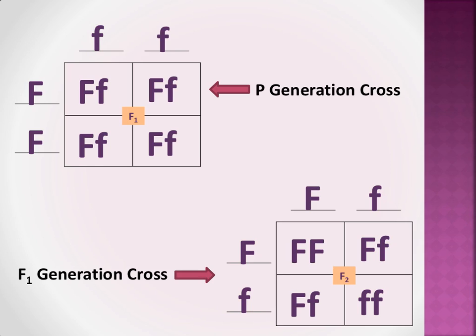Now let's consider that same exact information in Punnett square form. This Punnett square is the P generation cross — this would be the purebred white flower, and this would be the purebred purple flower. The resulting offspring are the F1, and you can see that they're all hybrids. When you cross the F1, as shown here in this cross, the F2 are inside of the Punnett square. They're predicted to have that 3 to 1 phenotype of purple flowers to white flowers.